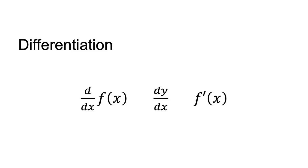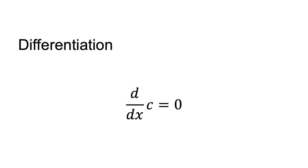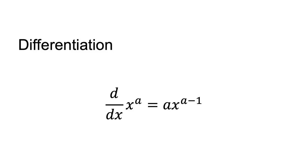The derivative of a constant is 0: d/dx of c equals 0. The derivative of an exponentiation is d/dx of x to the power of a equals a times x to the power of a minus 1.